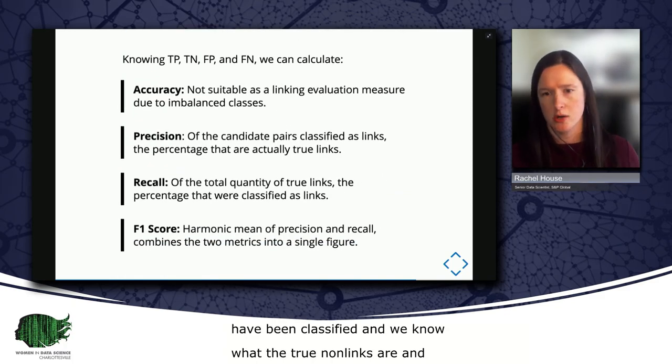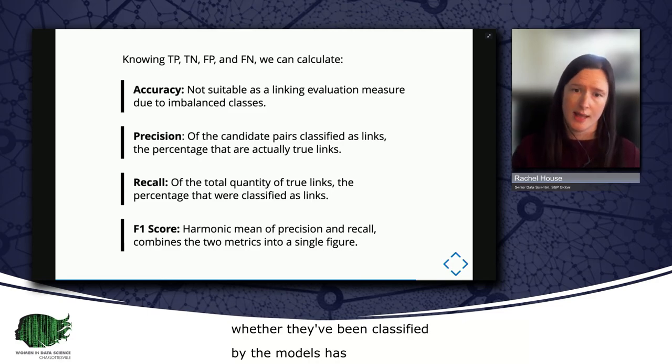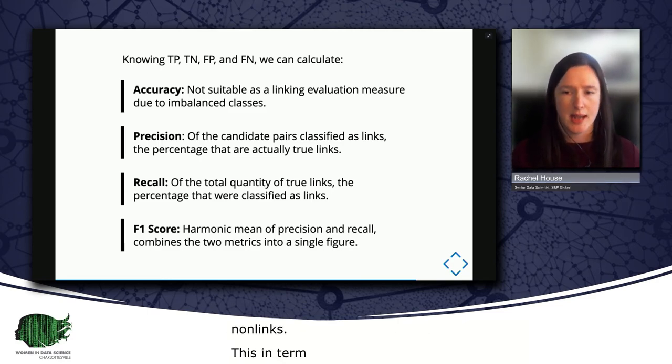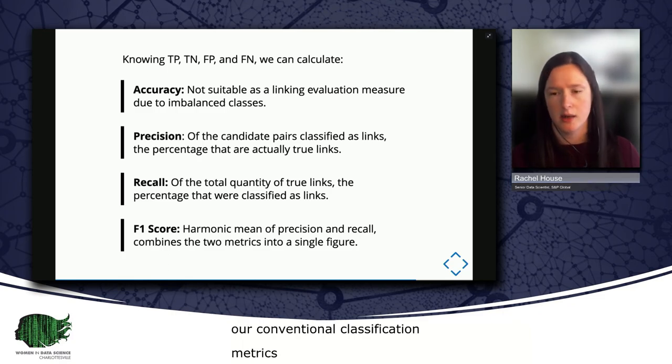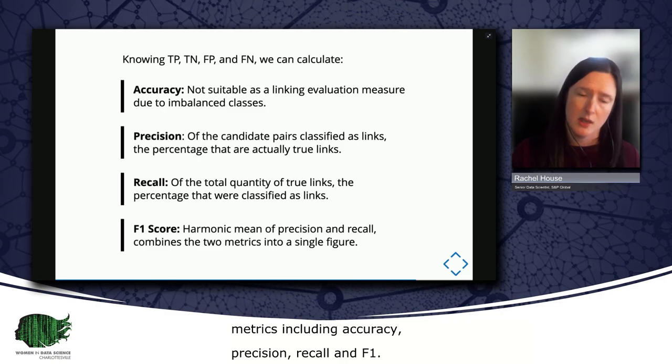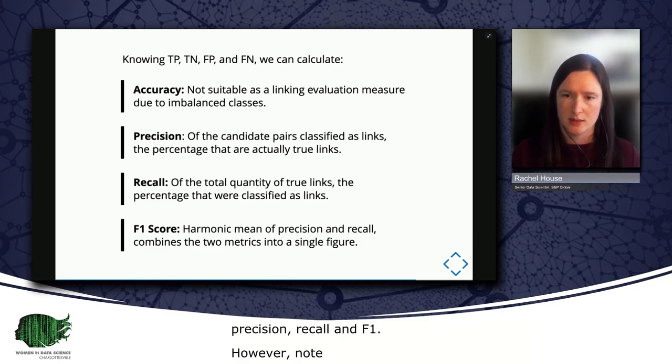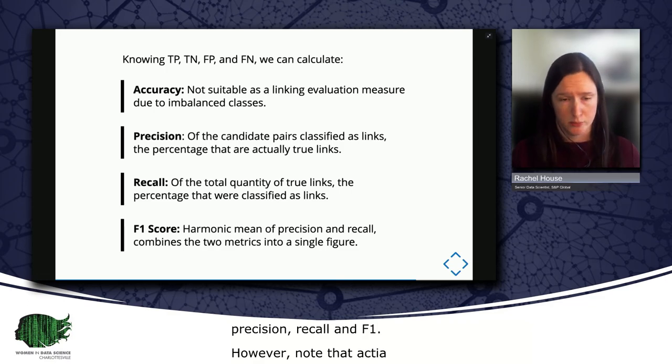This, in turn, gives us access to our conventional classification metrics, including accuracy, precision, recall, and F1. However, note that accuracy is not a suitable linking evaluation metric due to the wild class imbalance. Don't use accuracy to evaluate linking. Stick to precision and recall instead.